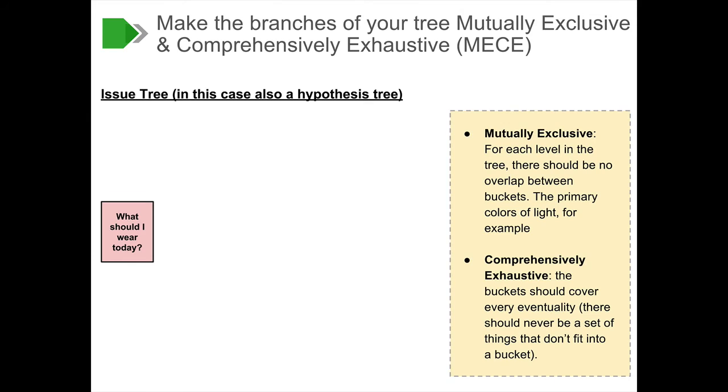So how do we apply this newfangled concept to an issue tree anyway? For an issue tree to be mutually exclusive, for each level in the tree, there should be no overlap between any buckets. The primary colors of light, for example. And for the issue tree to be comprehensively exhaustive, the buckets should cover every eventuality. There should be no set of things that don't fit into at least one of the buckets.